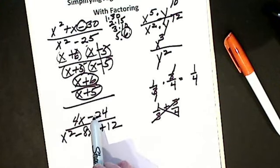I look at my numerator — hopefully you see it's not a trinomial, it has two terms. Could it be difference of two squares or greatest common factor? Can't be difference of two squares — the 4 looks good but I can't take the square root of 24 evenly, and to be difference of two squares this would have to be a perfect square. So it's greatest common factor: I have 4 times x minus 6.